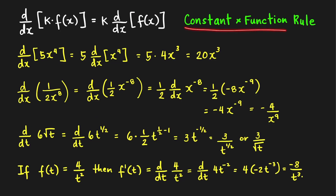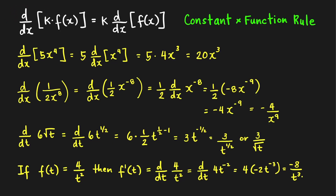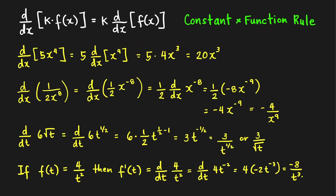Next, we have the constant times a function rule. When you take the derivative of a constant times a function, it is just equal to the constant times the derivative of the function — you can pull out the constant factor in front of the derivative operator. For example, the derivative with respect to x of 5x raised to 4: pull out the constant 5, apply the power rule — bring down the power 4 and subtract 1, giving new power 3. So we get 5 times 4x cubed, which equals 20x cubed.